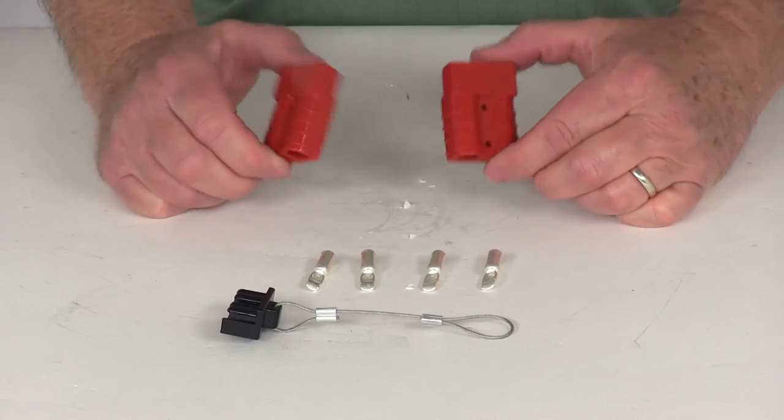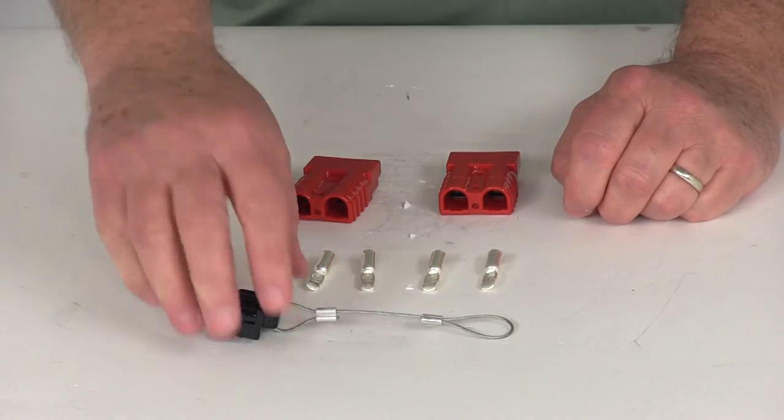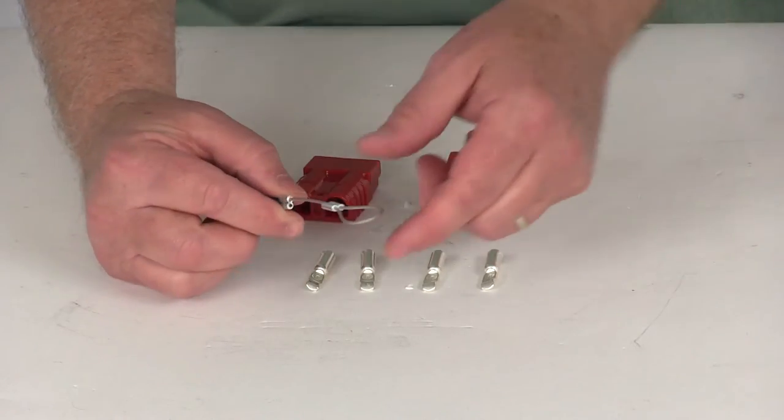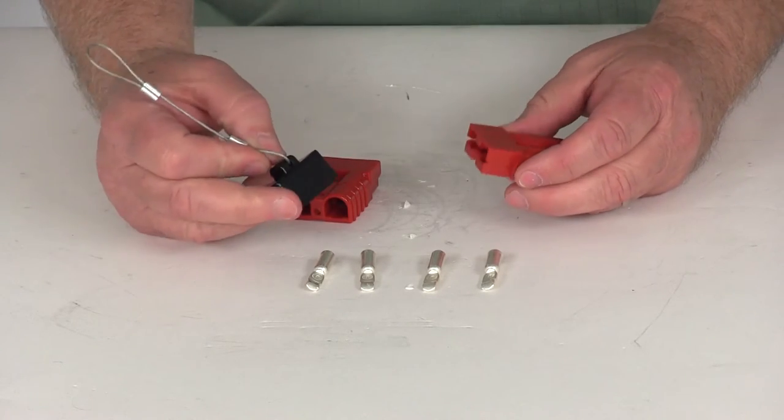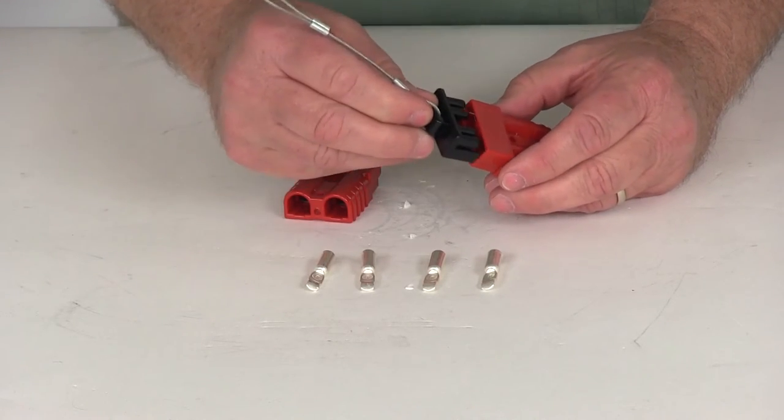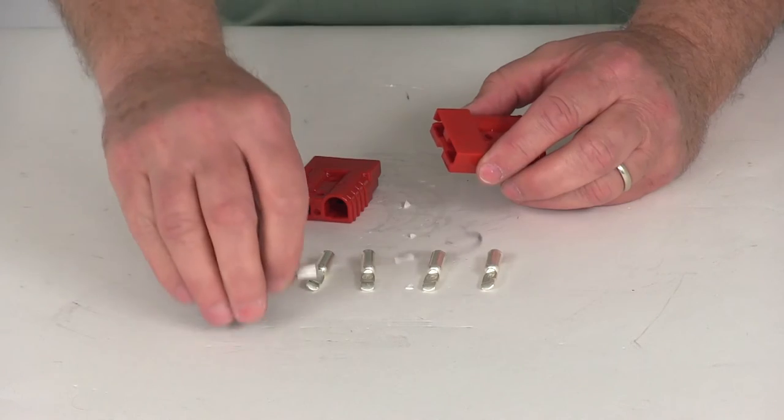Now this part does include the two connectors, the four terminals, and even includes a nice dust cover with a wire tether to it. So when one of them is disconnected like on your ATV or UTV, you just put your dust cover in to protect it.